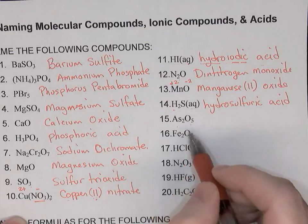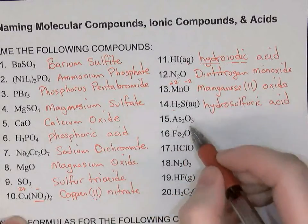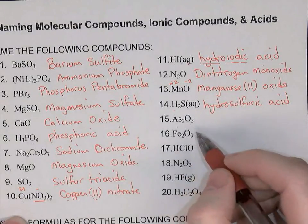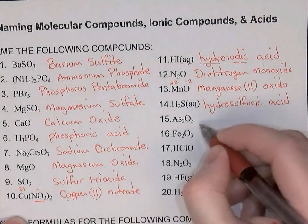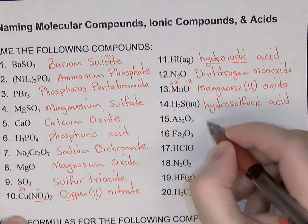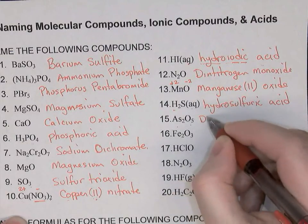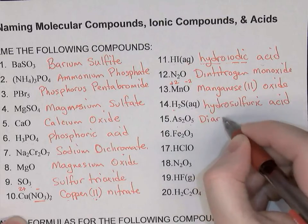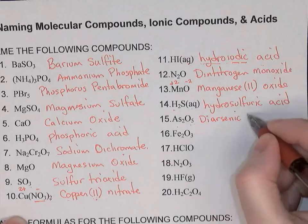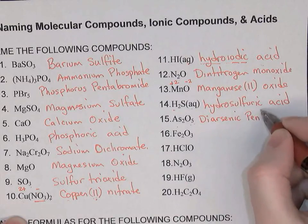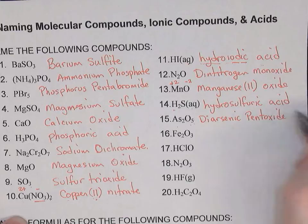Arsenic bonded to oxygen: those are both nonmetals, so this is a molecular compound. We're going to need prefixes for both elements. Two arsenics and five oxygens: the prefix for two is di, so di-arsenic, and for five oxygens we say pentoxide. We'll contract that to diarsenic pentoxide.